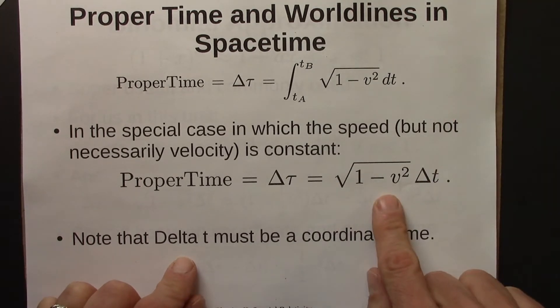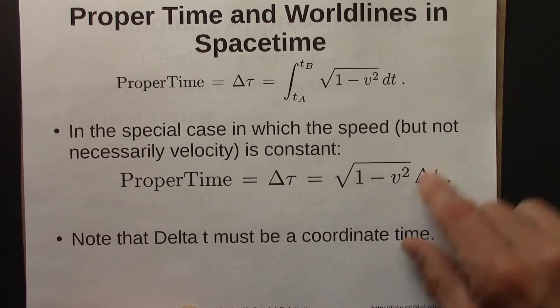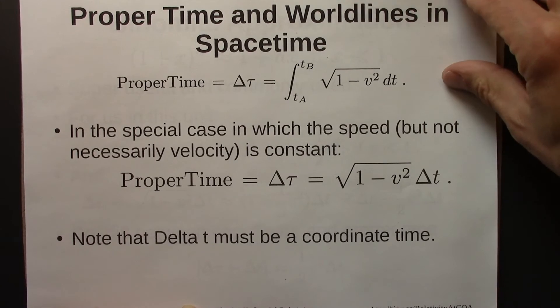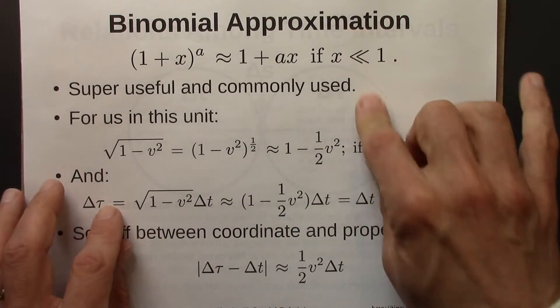We spent the rest of the unit exploring implications of this equation. The first thing we did was say, you know, often we're going to have really small v's, because remember v equals 1 is the speed of light. And in that case, there's a mathematical approximation that's super useful. And that's the binomial approximation.